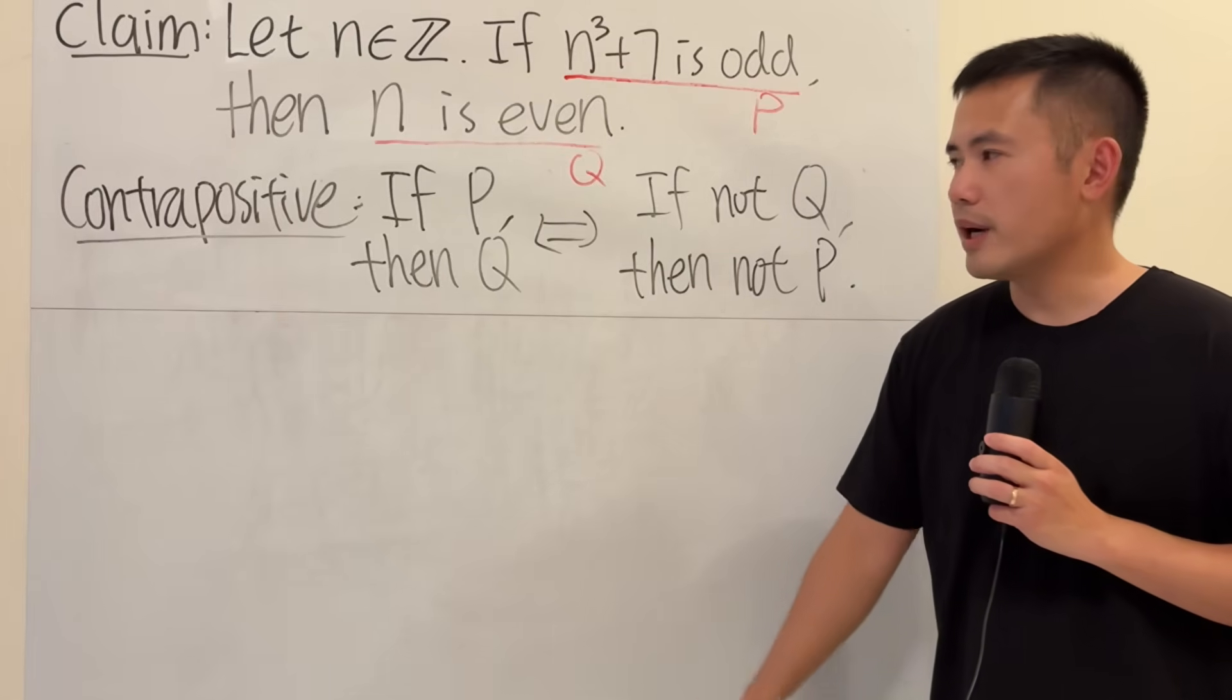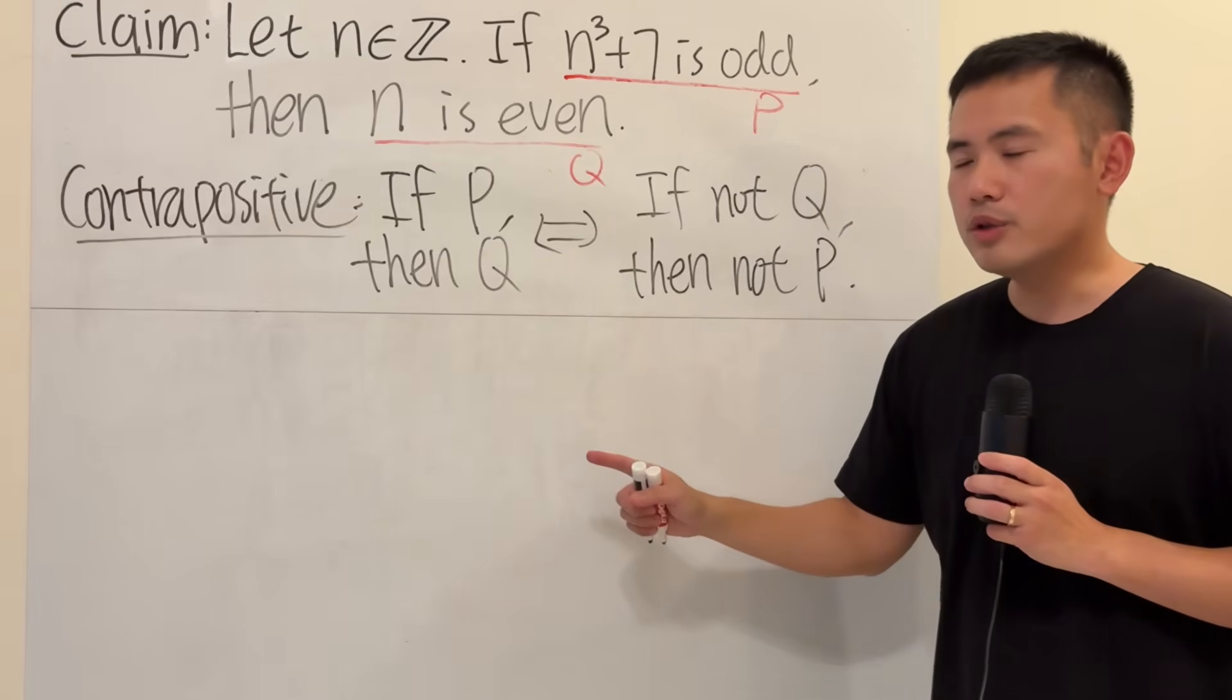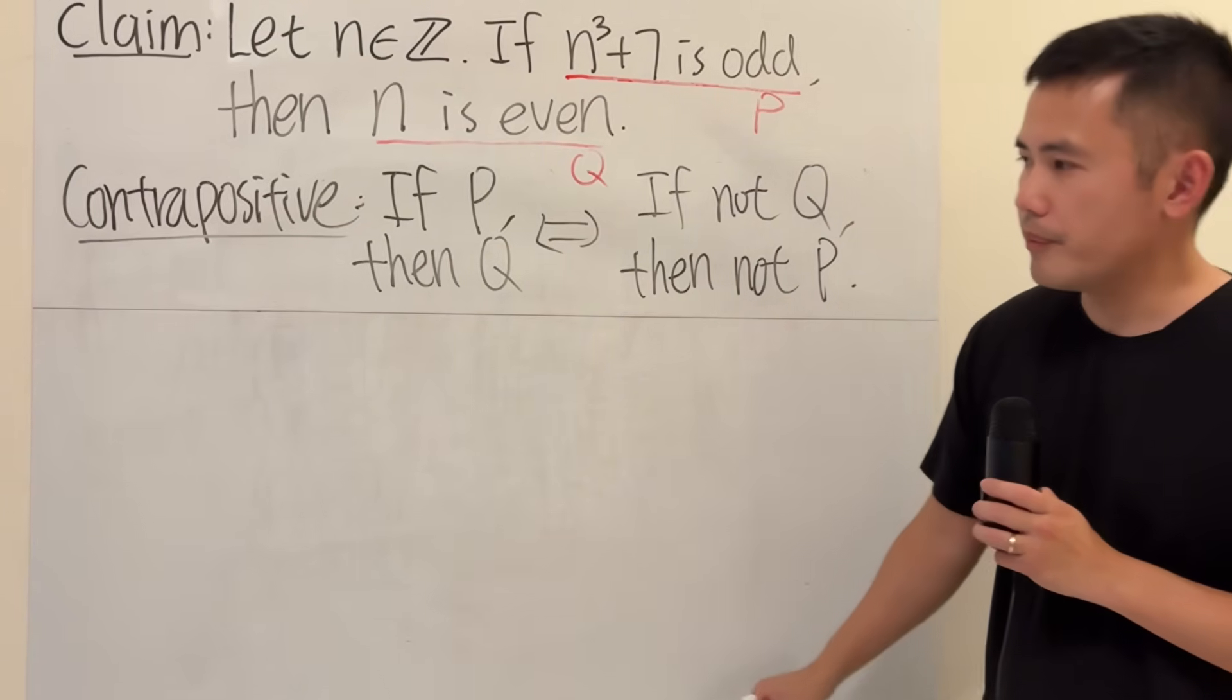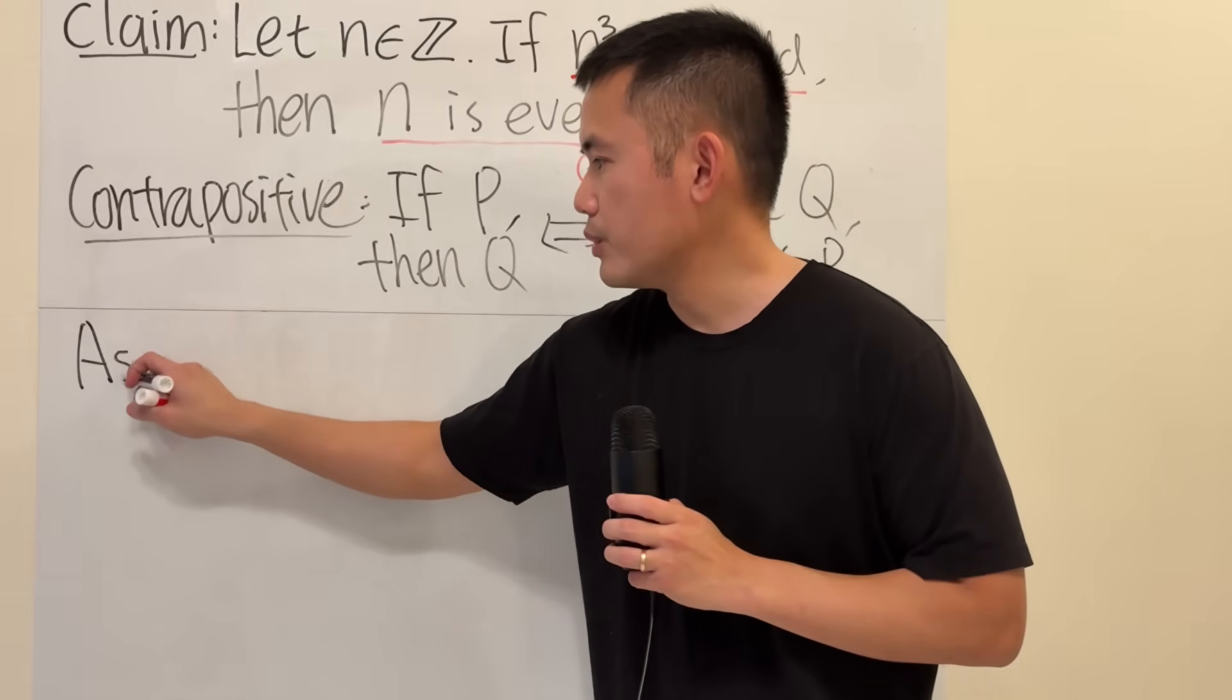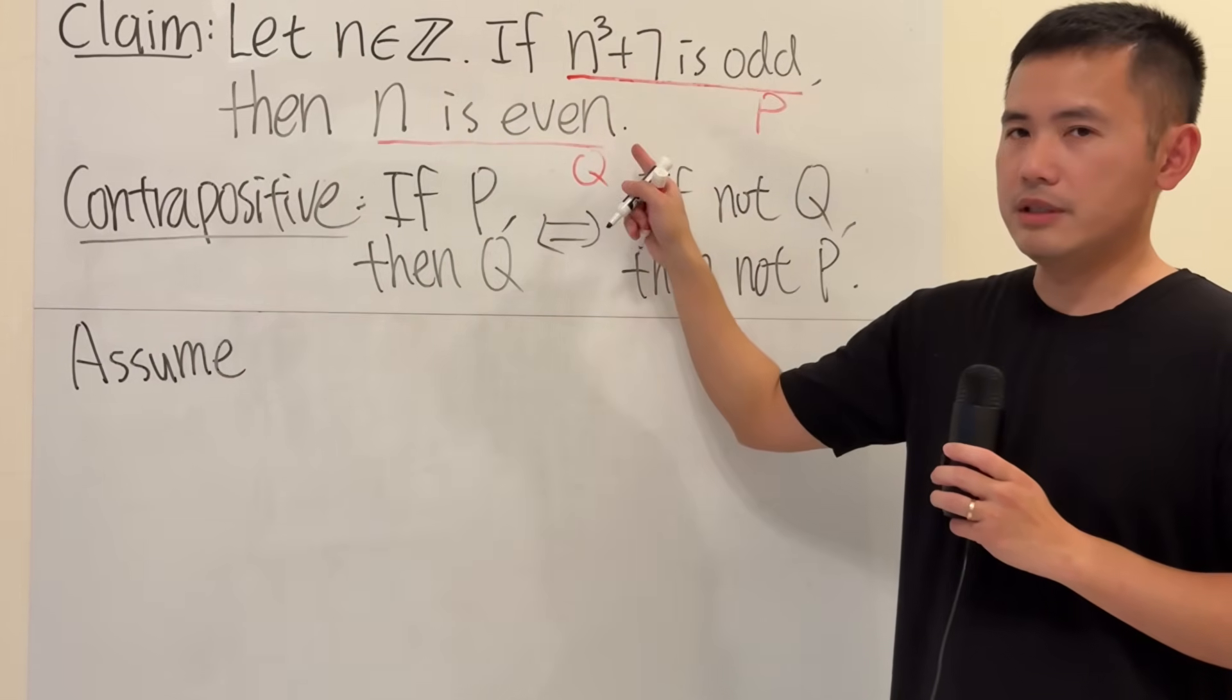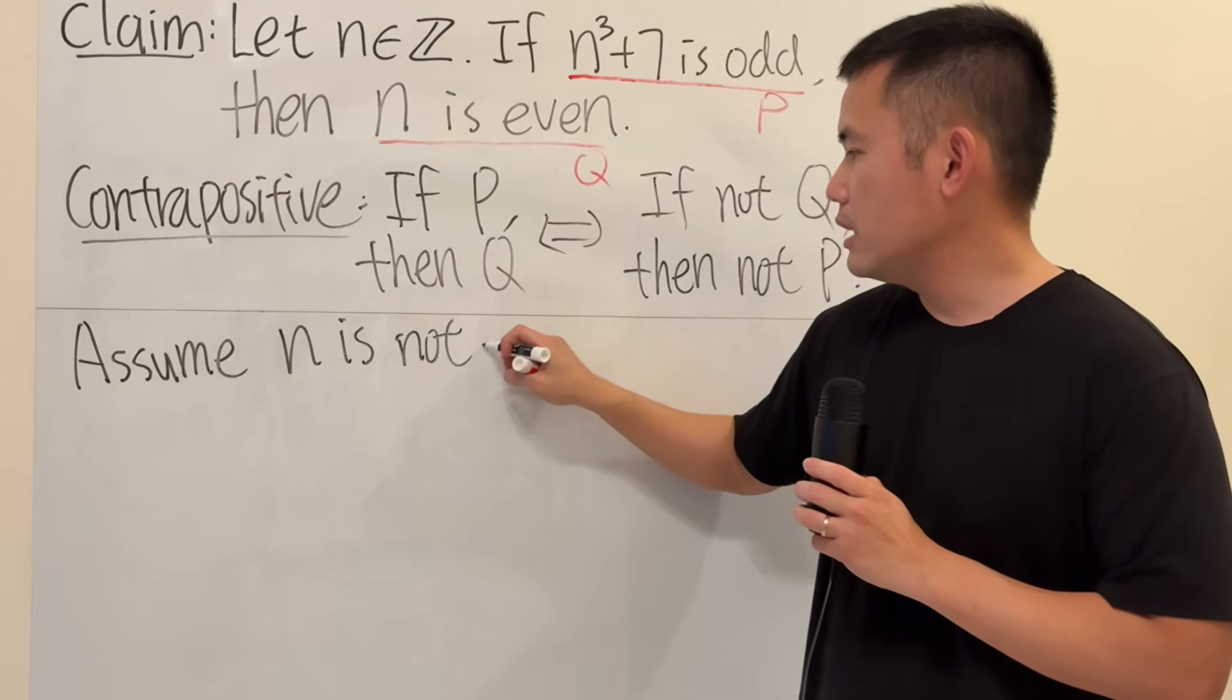So, instead of trying to prove if p, then q, we can try to show that if not q, then we don't have p. So, here is how we are going to do it. I'm going to start off by saying, assume that we don't have this. That means n is not even.